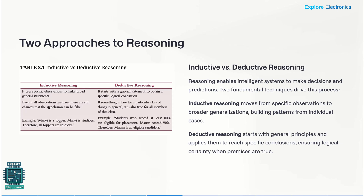An important distinction: even if all observations are true in inductive reasoning, there are still chances the conclusion can be false. But in deductive reasoning, if something is true for a class of things in general, it will be true for all members of that class. So deductive reasoning gives more certainty in reasoning.